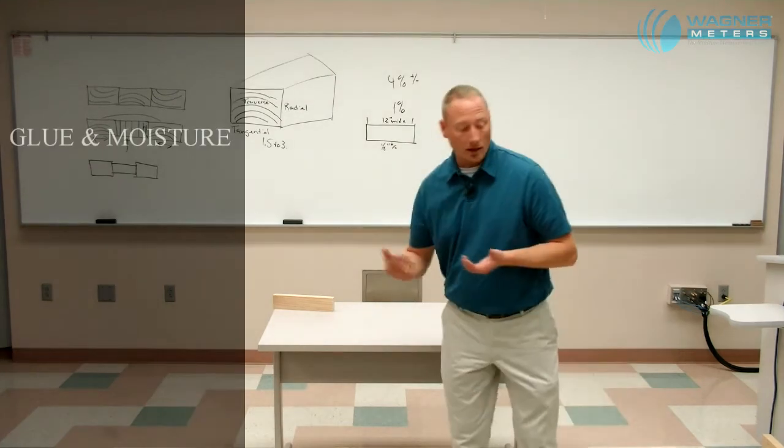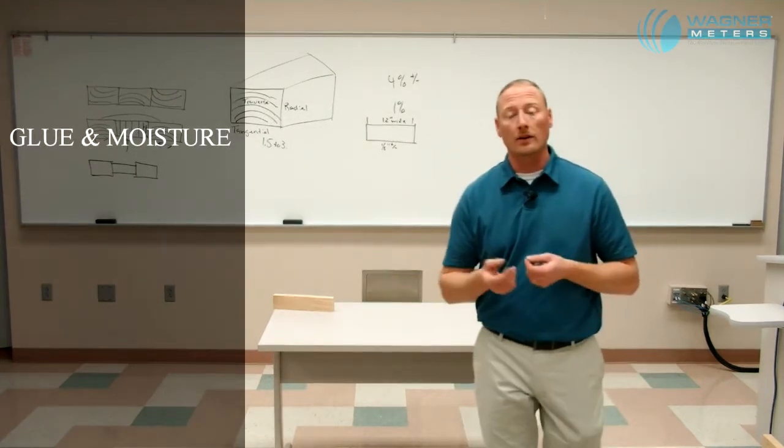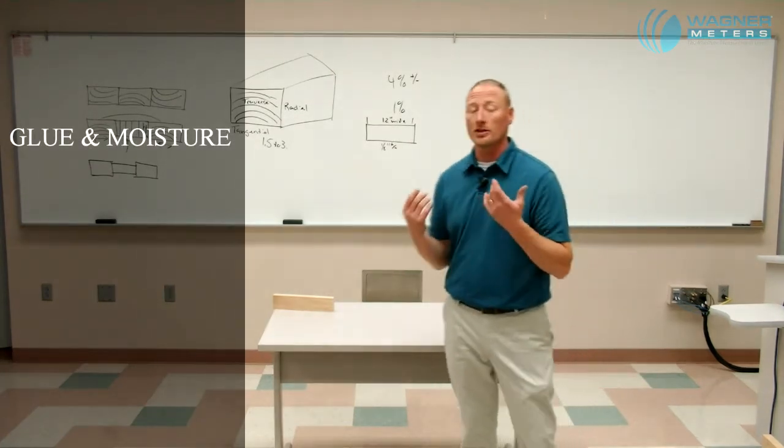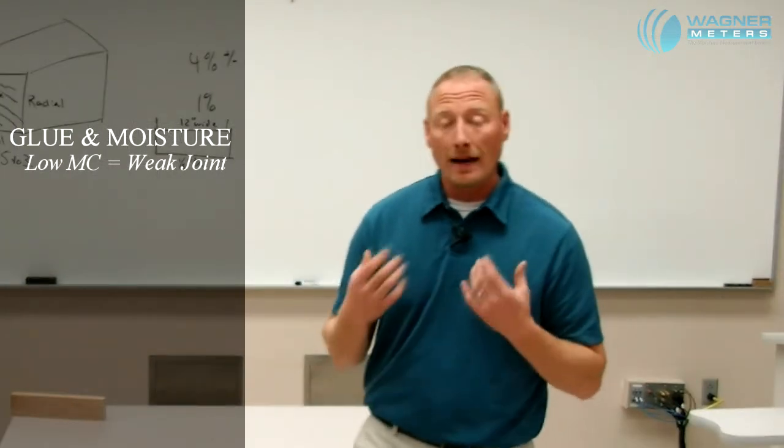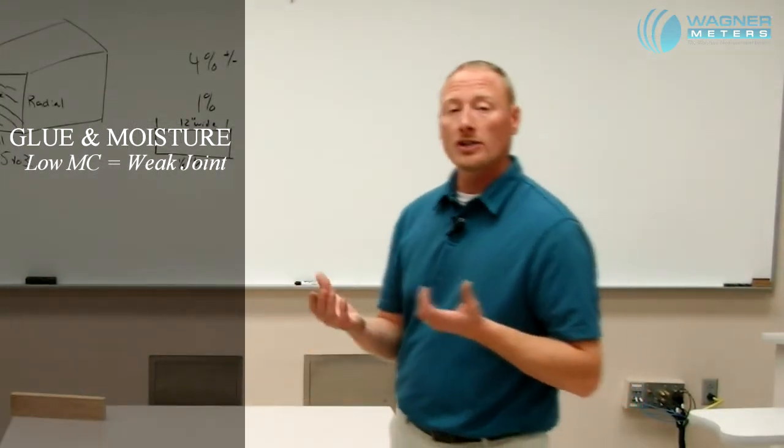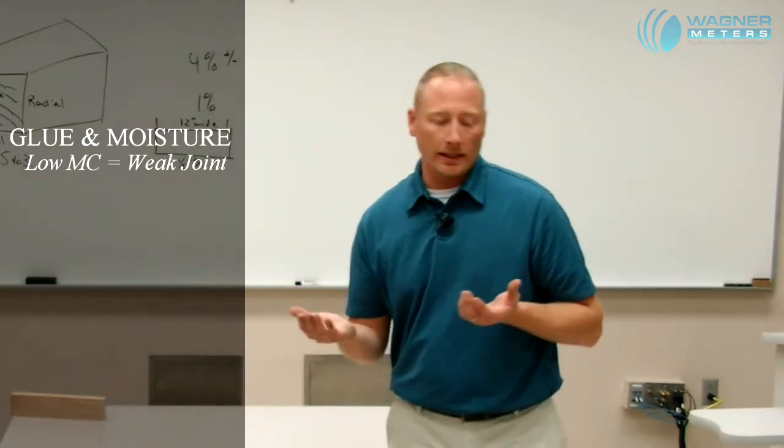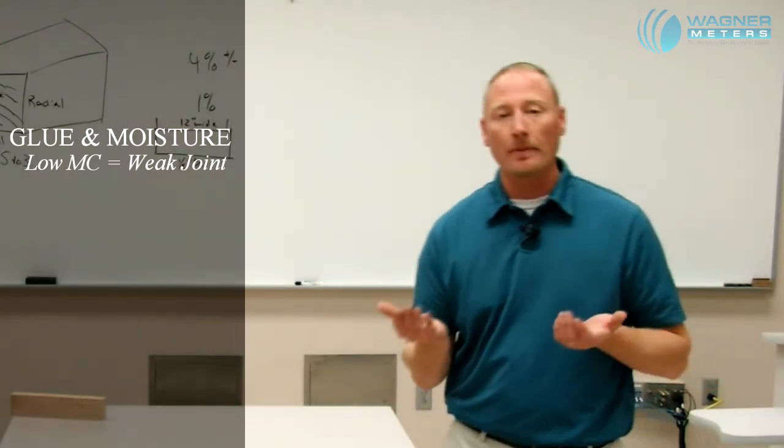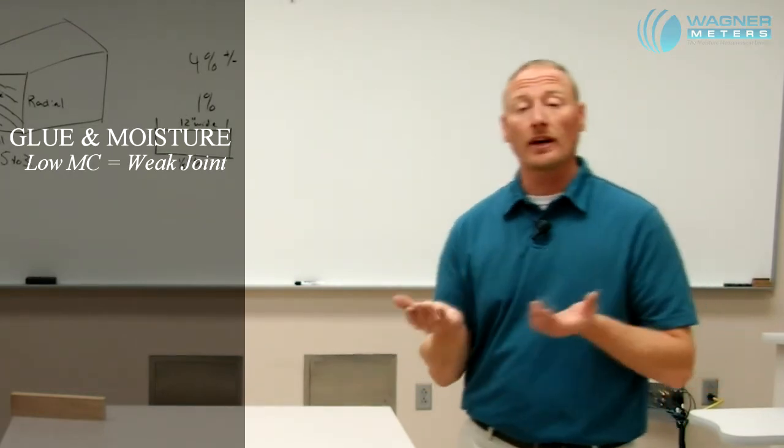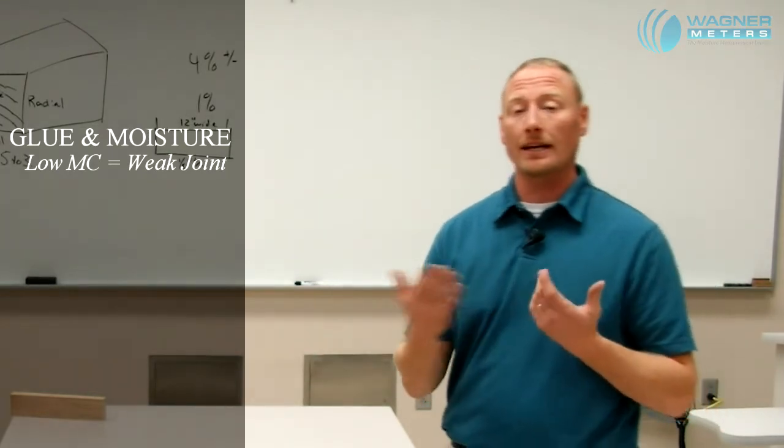Other complications that can occur is when we're gluing boards together. If we glue boards together that have a moisture content that is too low, that wood will actually absorb a majority of that moisture out of that adhesive prior to clamping. In doing so, what can actually happen is we are creating a joint that is very weak or has the possibility of failing at a later date.